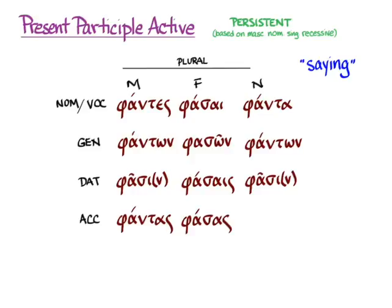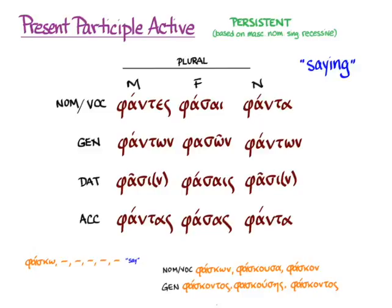Attic prose actually very rarely uses this participle and instead, if you need a participle that means saying or speaking, you'll probably see φάσκω, which means the same thing, only appears in the first principal part. And so the participle would be nominative φάσκων, and φάσκουσα, φάσκον, and φάσκοντος, φασκούσης, φάσκοντος in the genitive, and then so on, according to the paradigm that you already know.